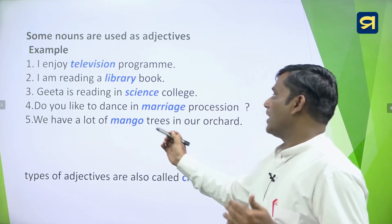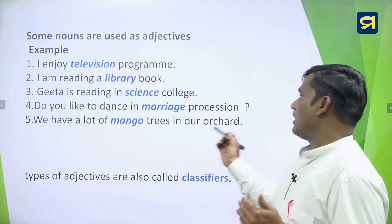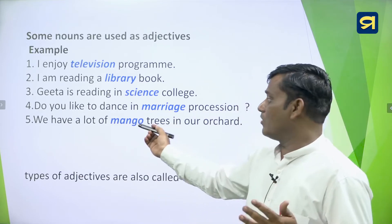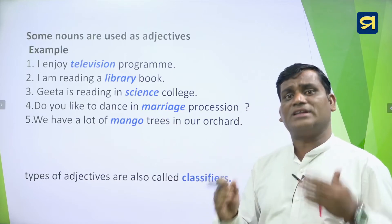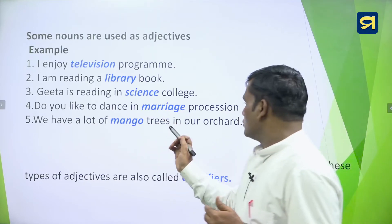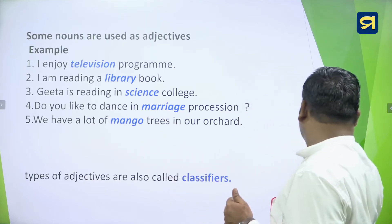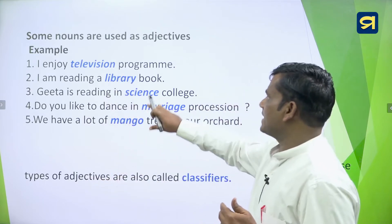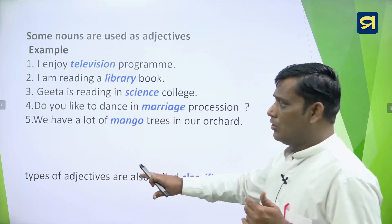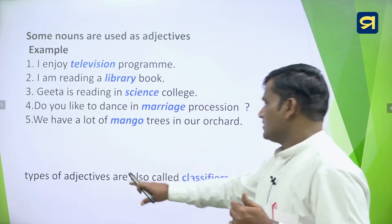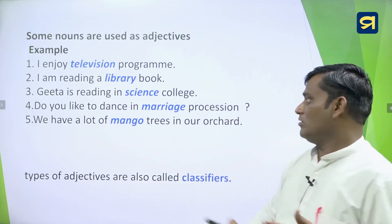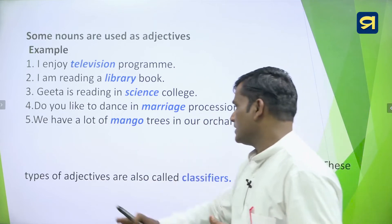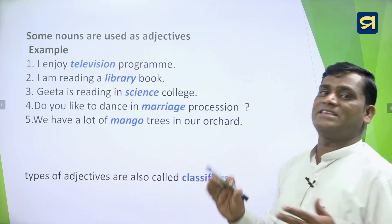'We have a lot of mango trees in our orchard' — mango is a noun but used as an adjective here. These types of adjectives — television, library, science, marriage, mango — which are actually nouns but used as adjectives are called classifiers.